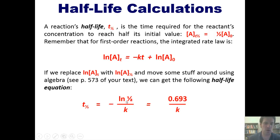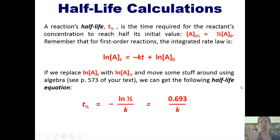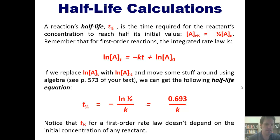Believe it or not, if you throw ln of 1/2 into your calculator, it comes out to be 0.693. We'll just round it to 0.693. This equation is very useful and pretty simple. Notice that T sub 1/2 for a first-order rate law does not depend on the initial concentration of any reactant.